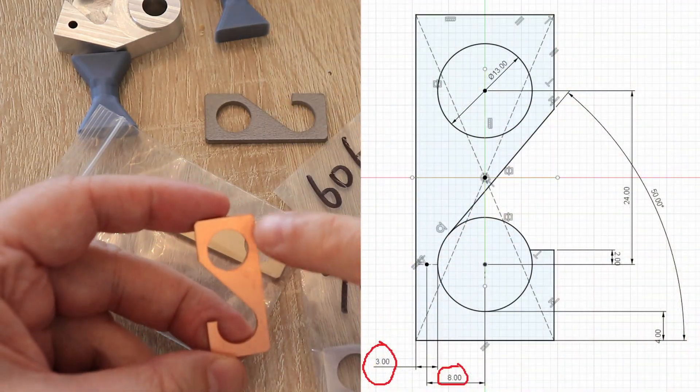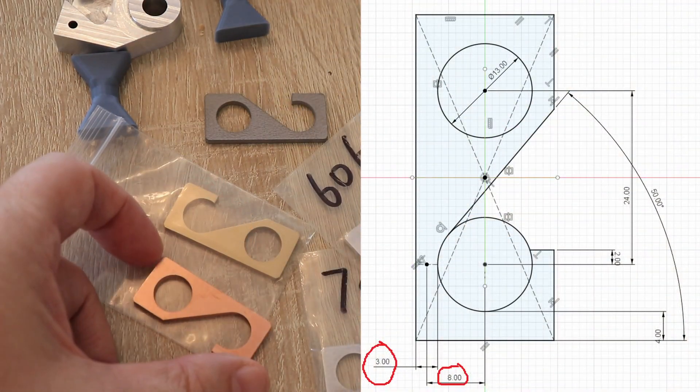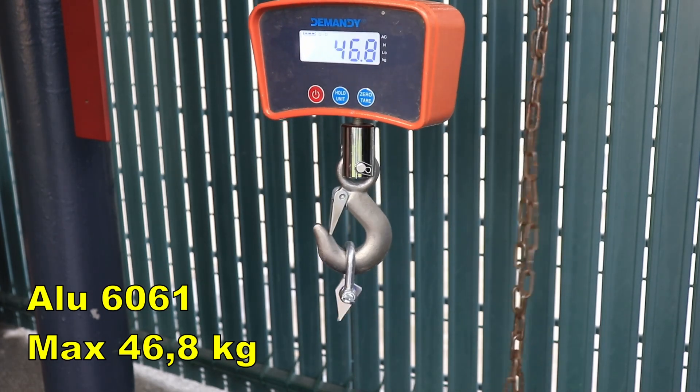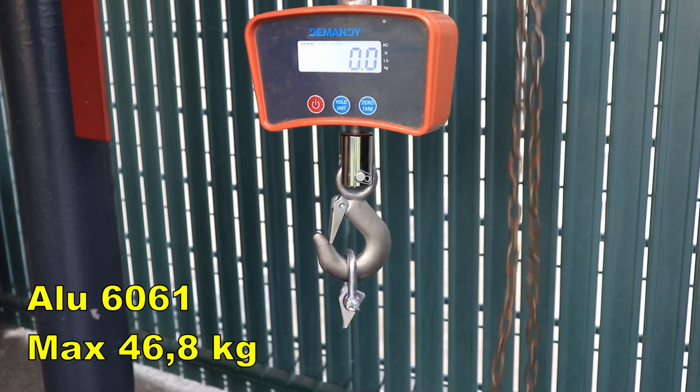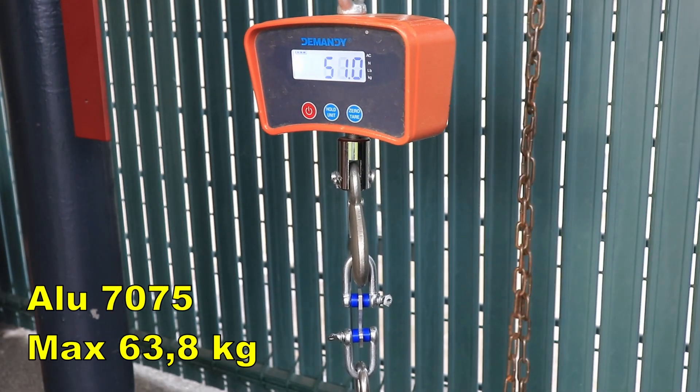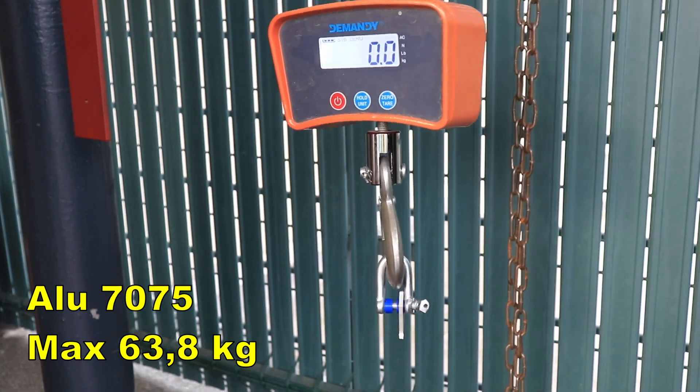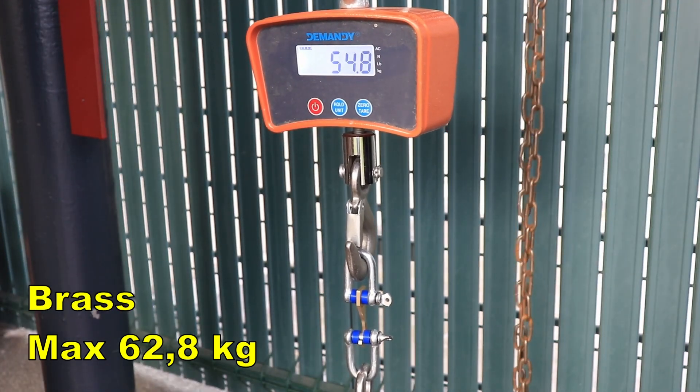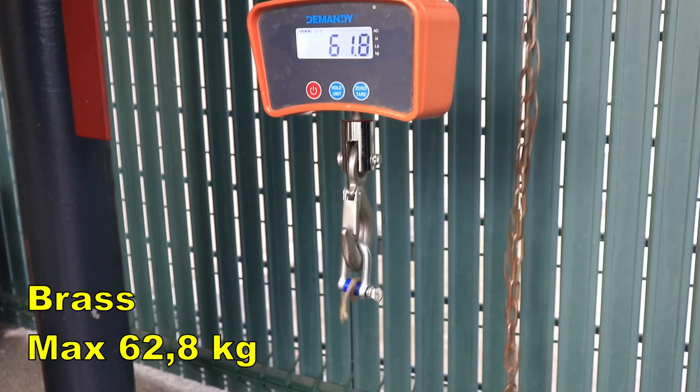But here you can see for the moment the drawing of this test object. The hook test I am starting with 6061 aluminum. 46.8 kg was the break load. 7075 was not so much stronger. Brass. From my experience the brass was very similar to the 7075 aluminum.